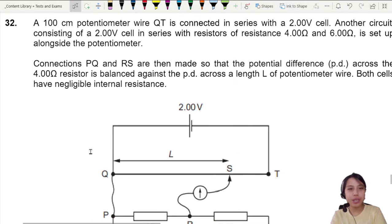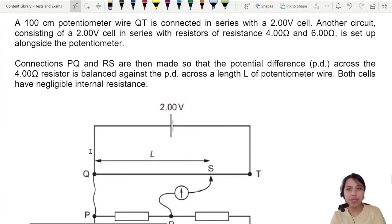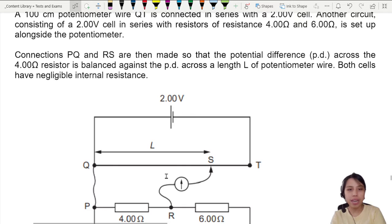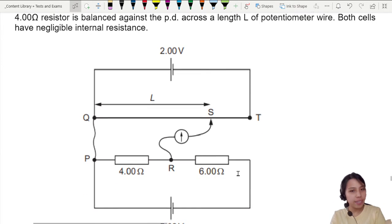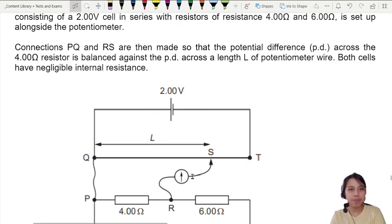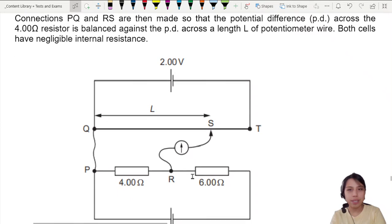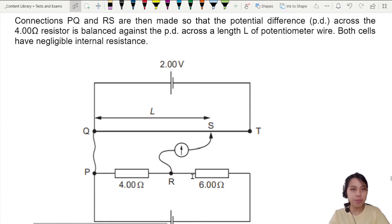A 100cm potentiometer wire is connected in series. Another circuit down there also connects. Here's where the important line comes in. The connection is made in such a way so that the 4 ohm resistor is balanced against a PD of this length L. That's a very important clue.